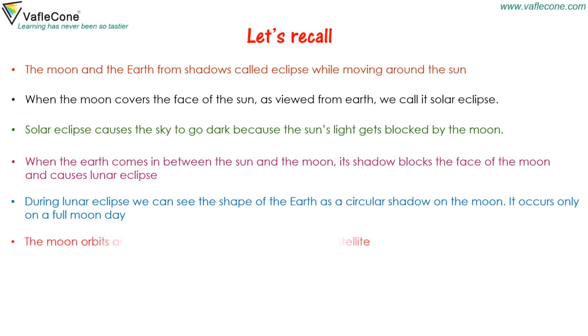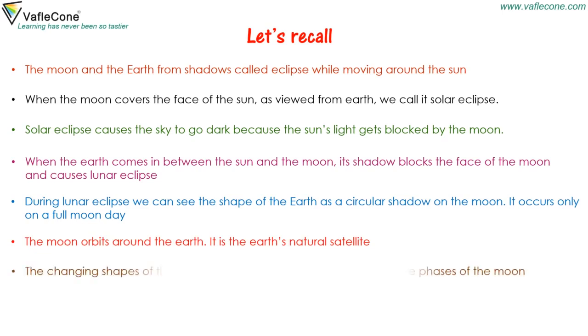The moon orbits around the earth. It is the earth's natural satellite. The changing shapes of the moon that we see every night are called the phases of the moon.